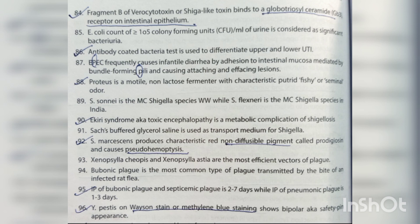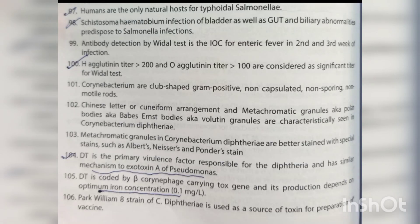Incubation period of bubonic plague and septicemic plague is 2–7 days, while pneumonic plague is 1–3 days. Yersinia pestis on Wayson or methylene blue staining shows bipolar (safety pin) appearance. Humans are the only natural host for typhoidal Salmonella. Schistosoma haematobium infection of the bladder, gut, and biliary abnormalities predispose to Salmonella infections. Widal test is the investigation of choice for enteric fever in the 2nd and 3rd week; H-agglutinin titer >1:200 and O-agglutinin titer >1:100 are considered significant.